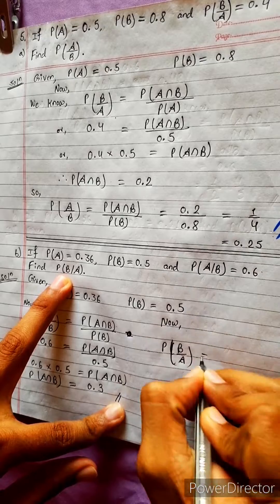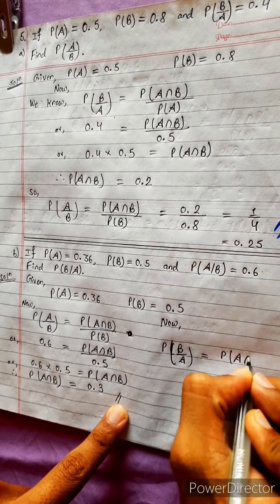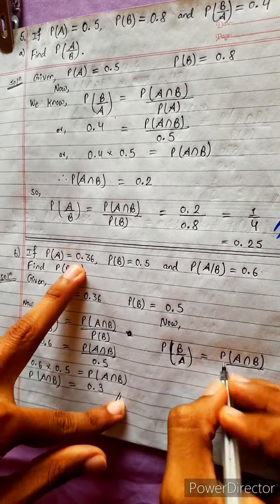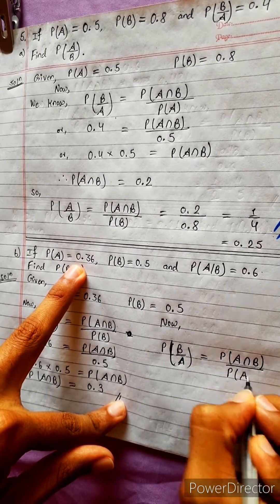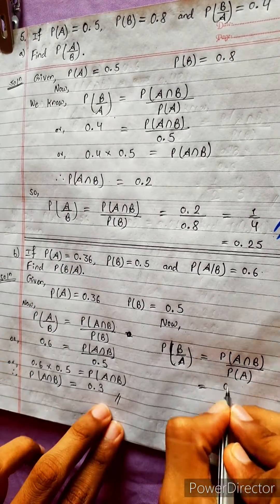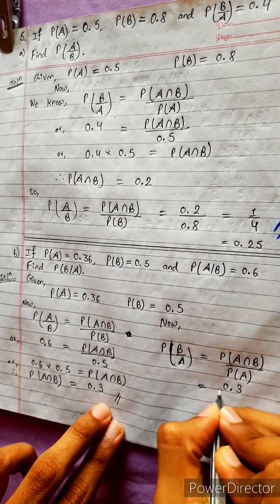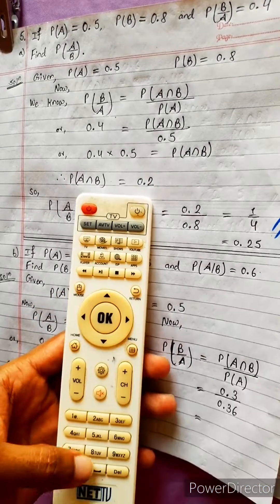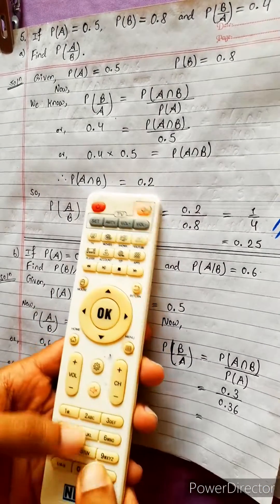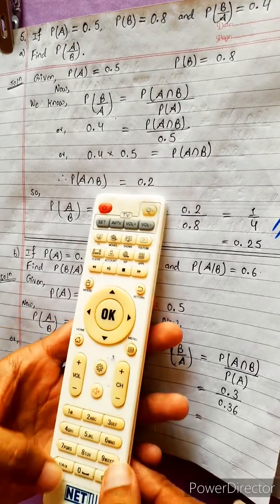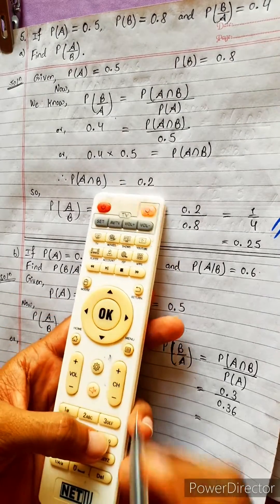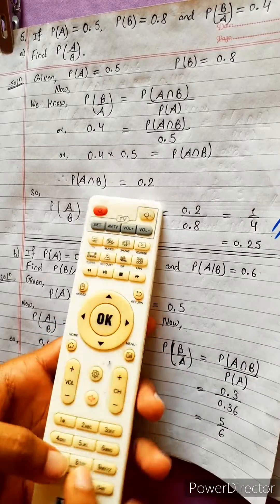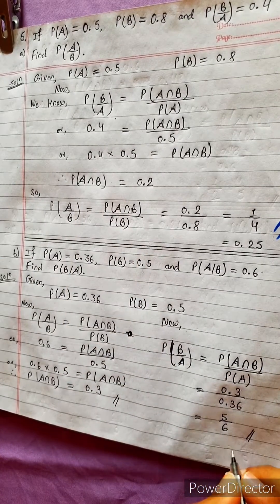The second thing we have to find is P(B|A), which equals P(A intersection B) divided by P(A) — that is 0.3 divided by 0.36. This equals 5 by 6. The answer is 5 by 6.